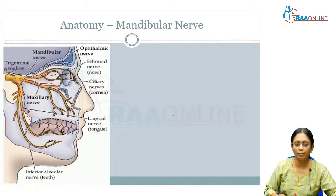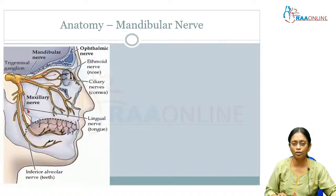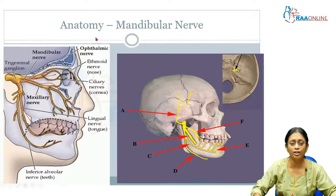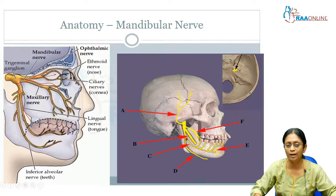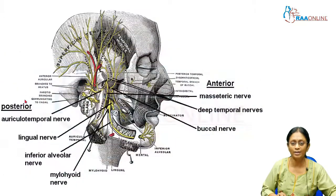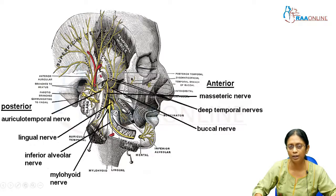Now, a reiteration of the branches of this nerve. When looking at these branches, particularly the anterior and posterior divisions: the anterior division gives off branches to the muscles of mastication. On the diagram, the zygomatic arch is shown cut to reveal the underlying structures.